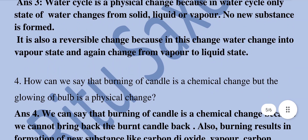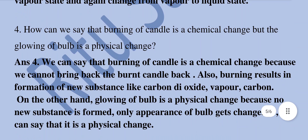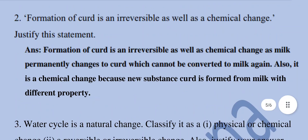How can we say that burning of a candle is a chemical change but the glowing of a bulb is a physical change? Burning of a candle is a chemical change because we cannot bring back the burnt candle, and burning results in formation of new substances like carbon dioxide, vapour, and carbon. On the other hand, glowing of a bulb is a physical change because no new substance is formed — only the appearance of the bulb gets changed.